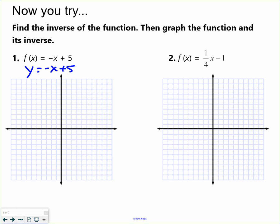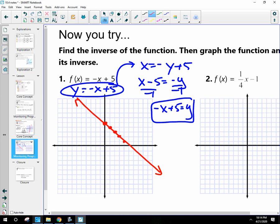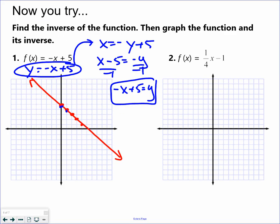Y equals negative x plus 5 is the original question. Switch x and y and solve for y. So divide by negative 1. So now, graphing both. Crosses the y-axis at 5 with a slope of negative 1. There's the original line. Second one. Crosses the y-axis at 5. And also has a slope of negative 1. So are the same line. That doesn't happen all the time, but it did in this case.